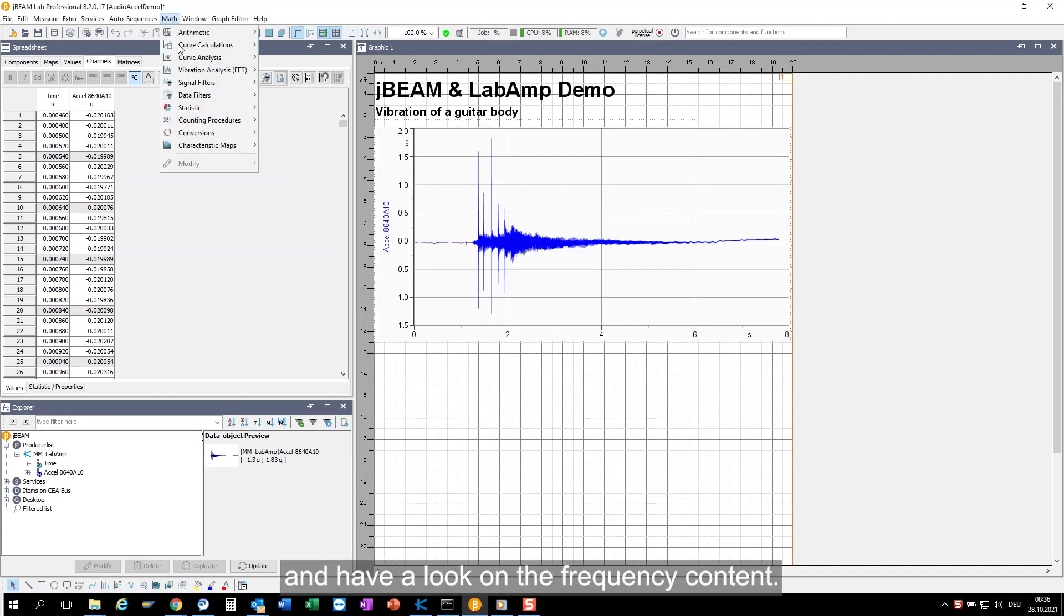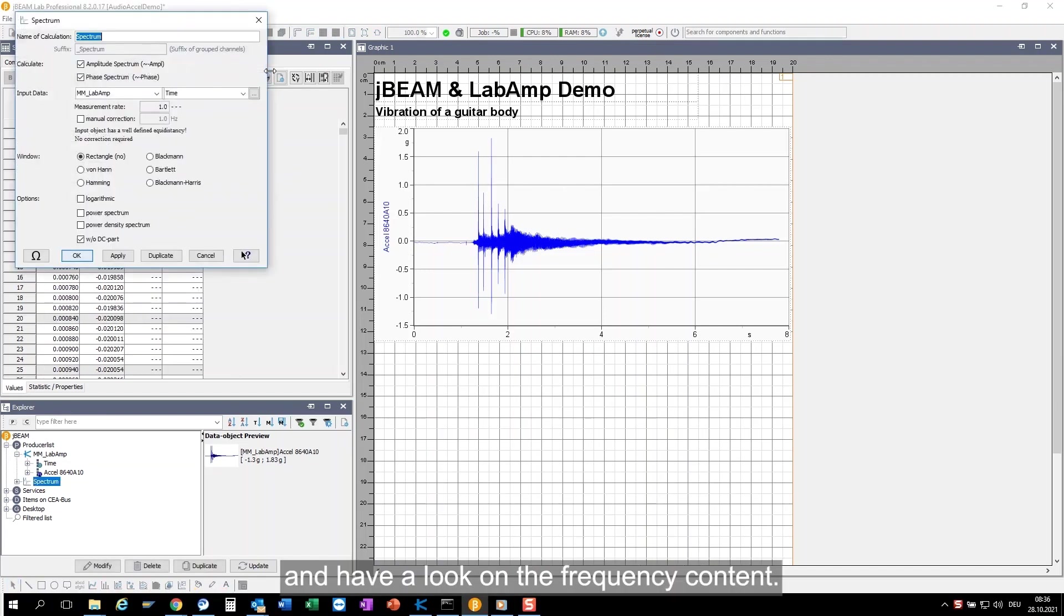Let's make an FFT and have a look at the frequency content. I'm interested in the amplitude spectrum only and I'm happy with the rectangular window.